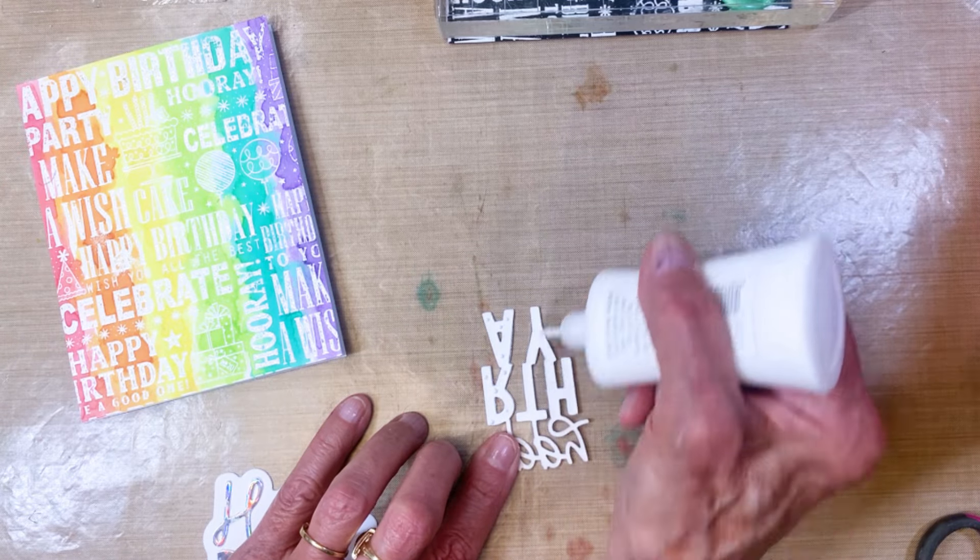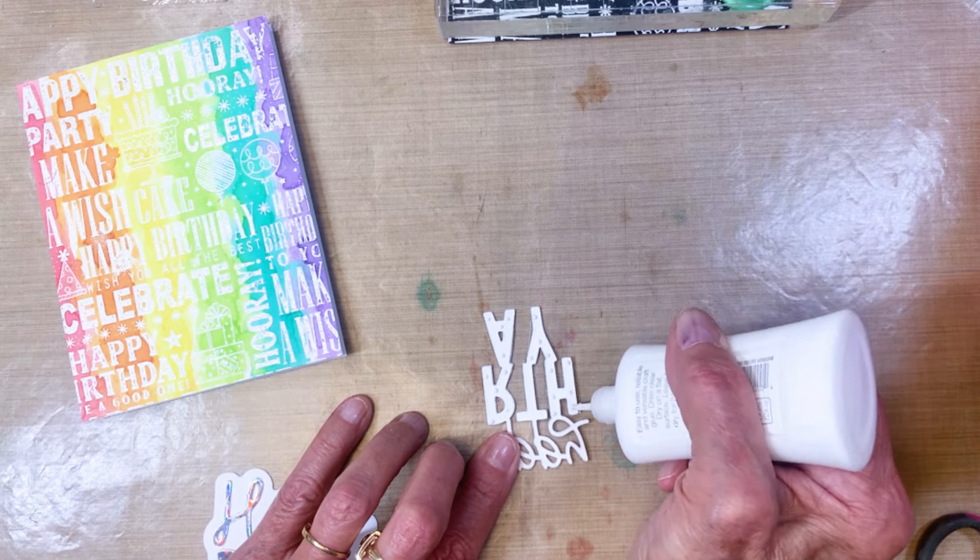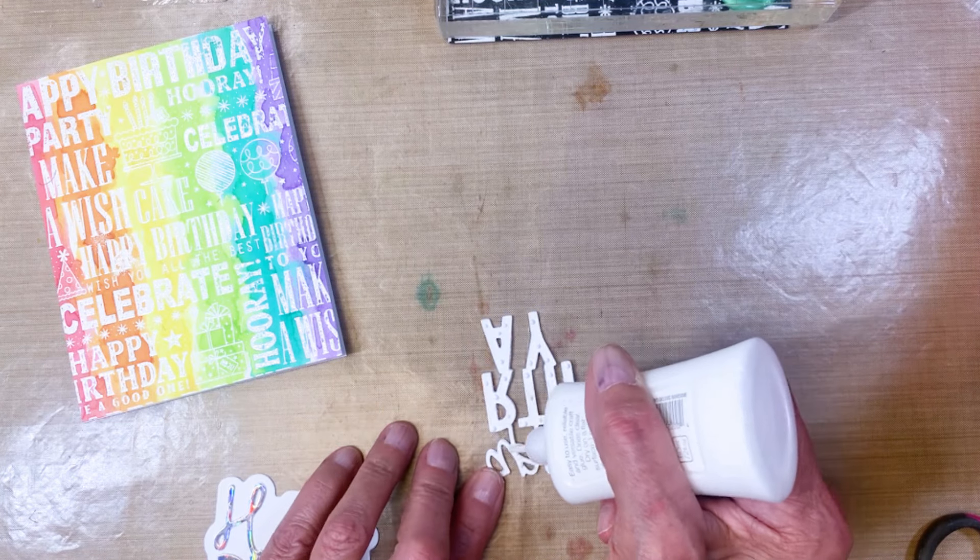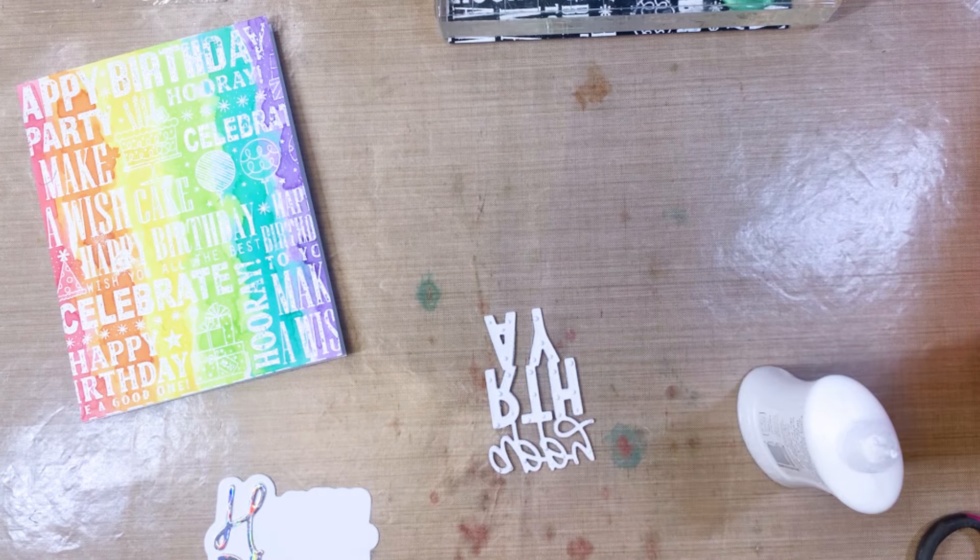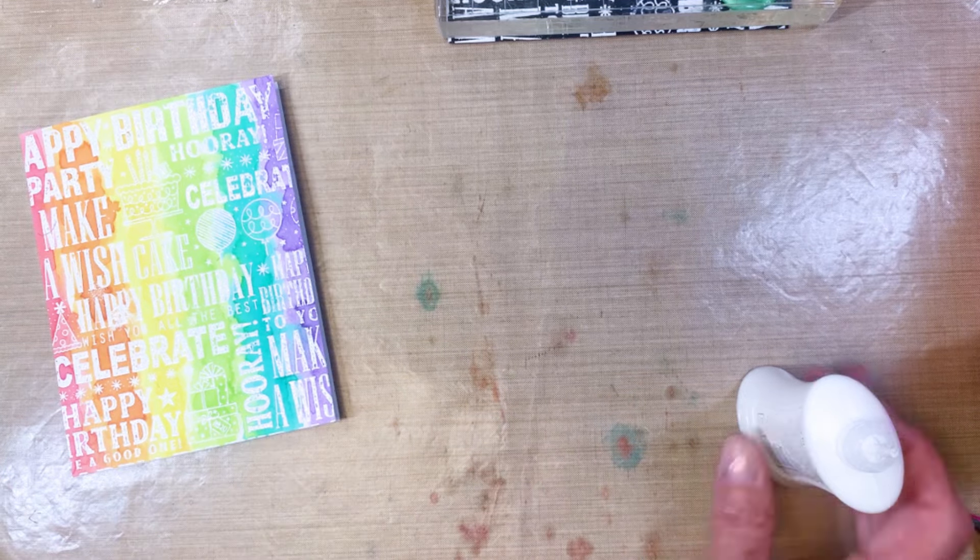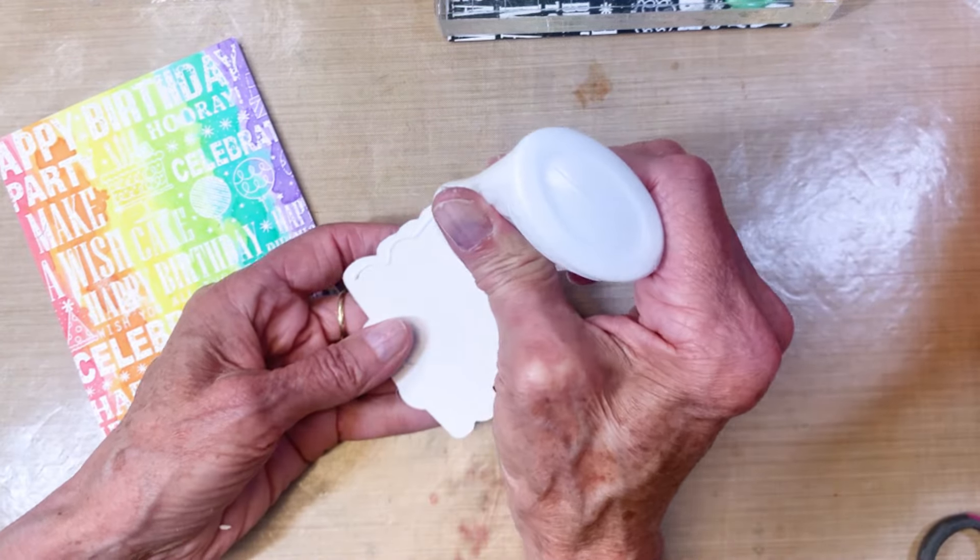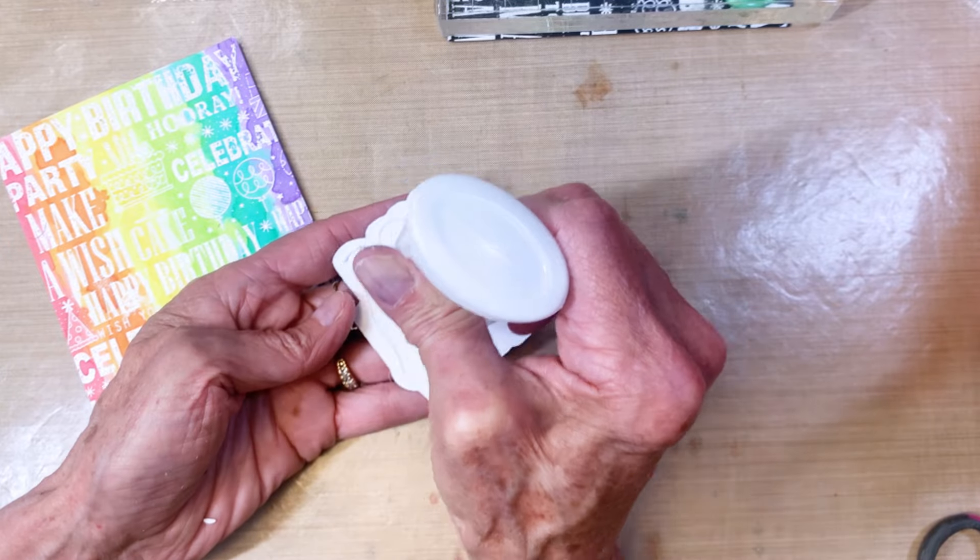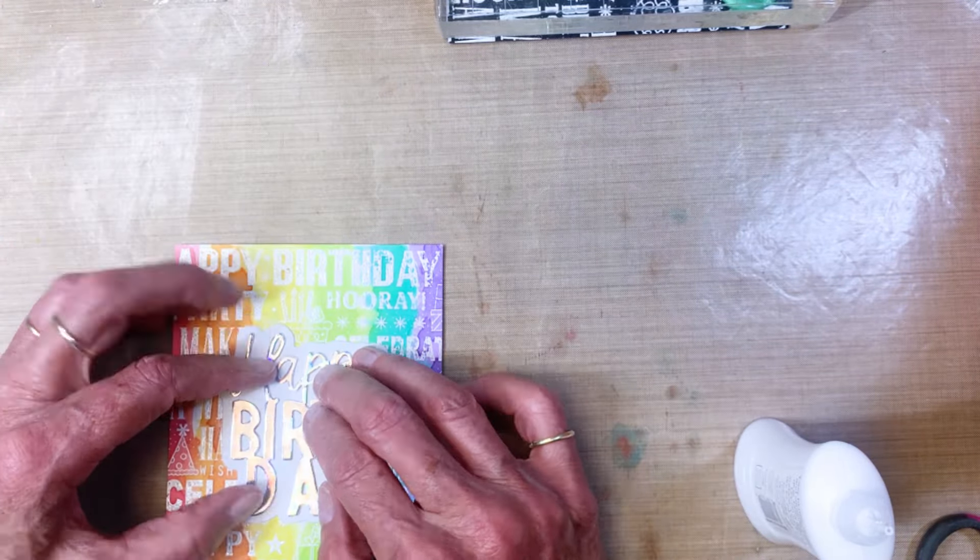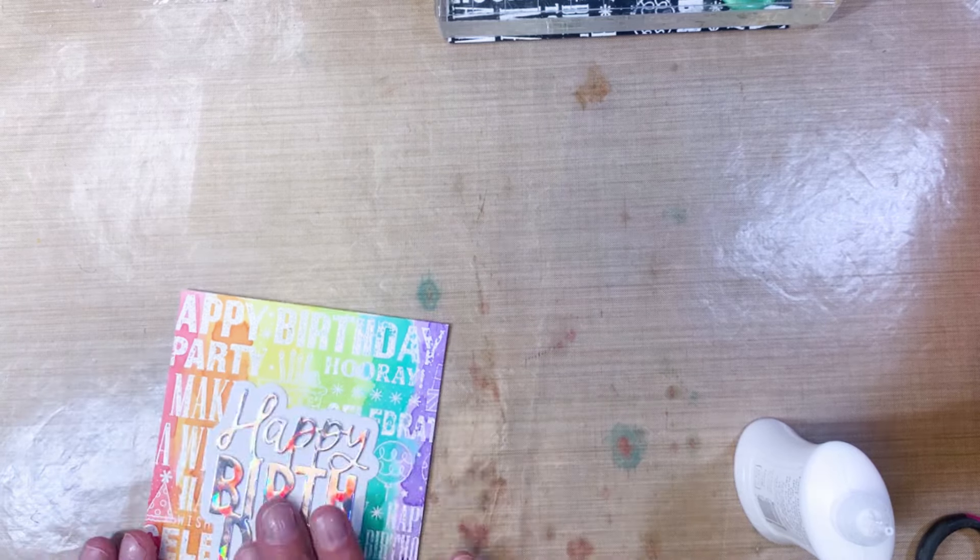I decided to use the white shadow background and I'm using holographic cardstock. I love this stuff. It's so much fun to work with because it really picks up the colors. I ended up gluing the letters onto the white shadow background and then popped that on the front of the card. Look at all those colors.